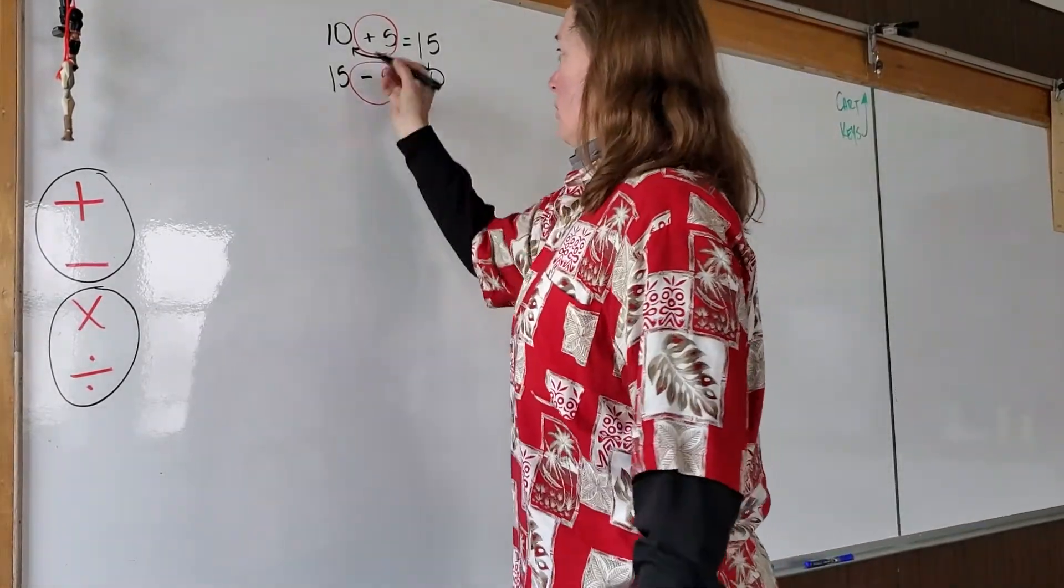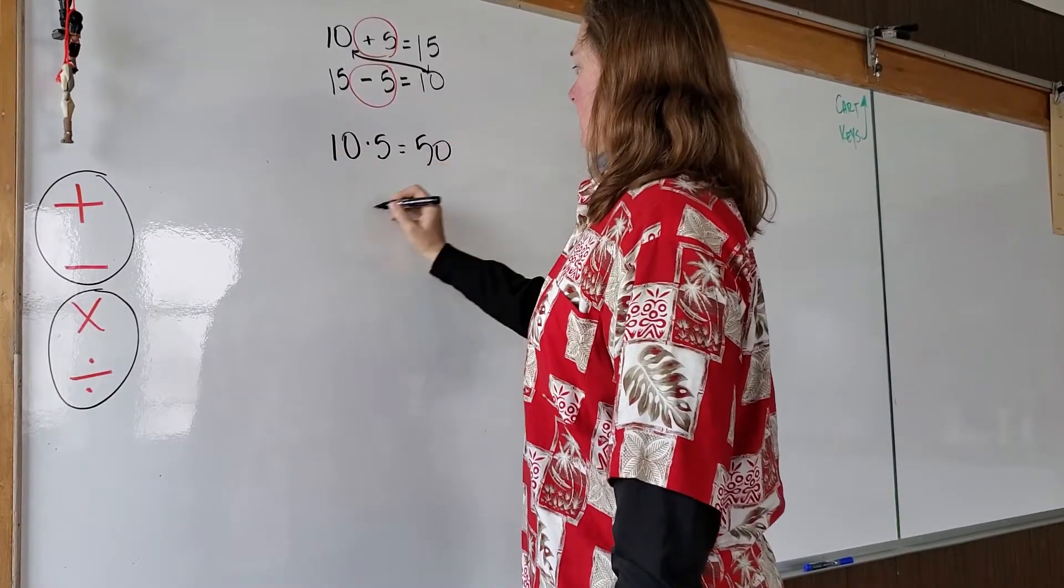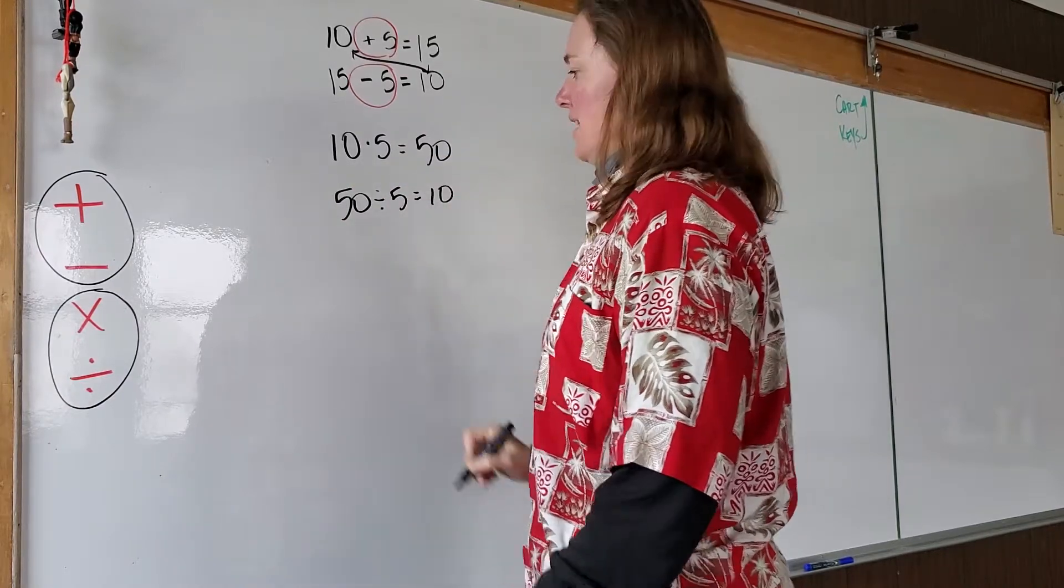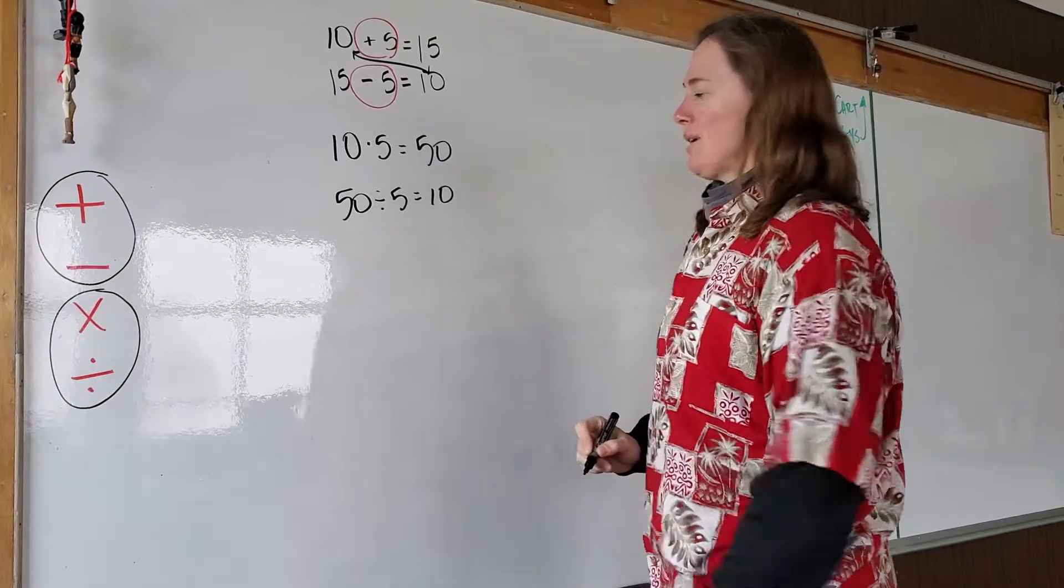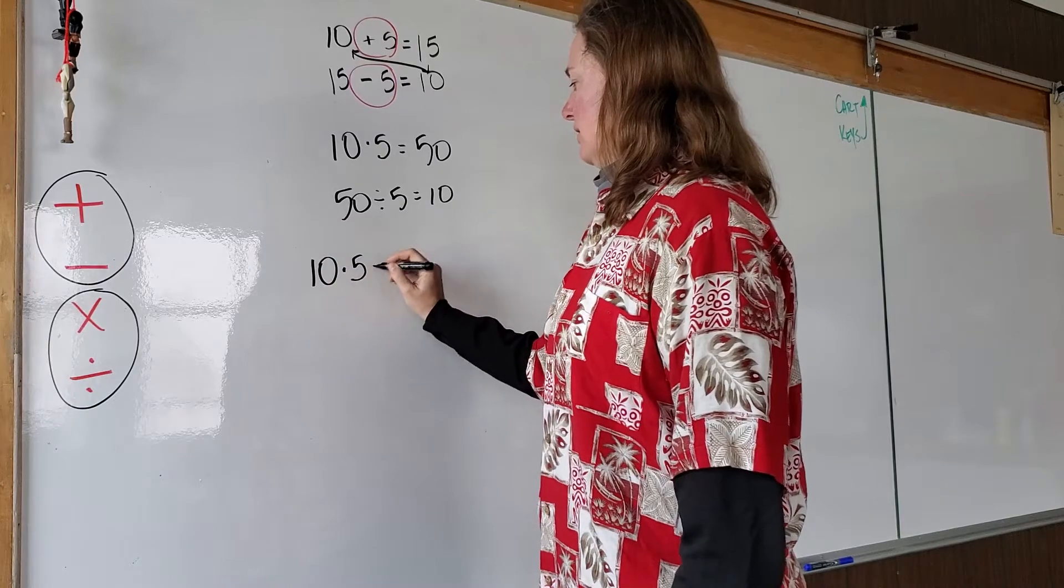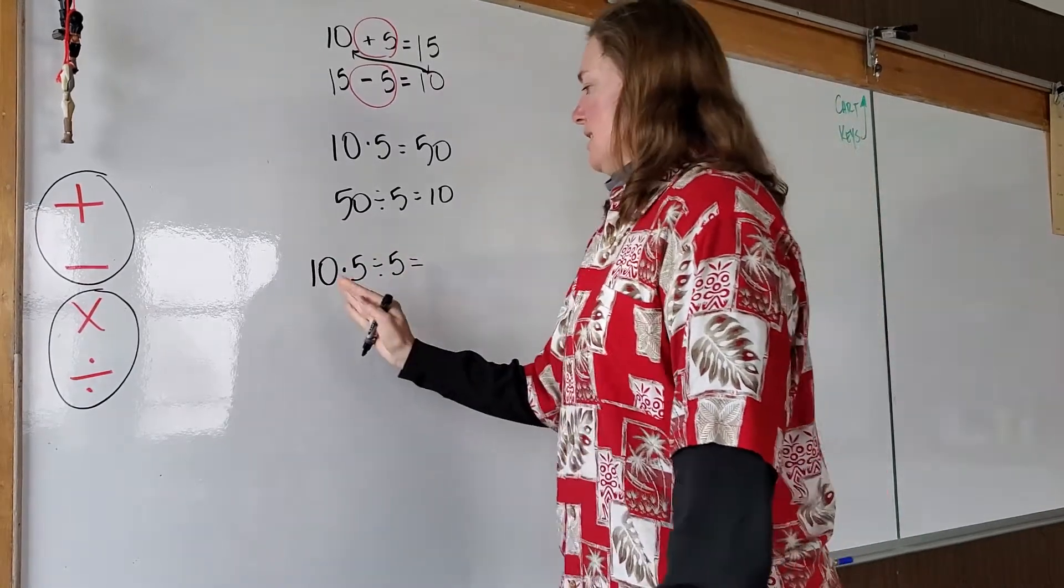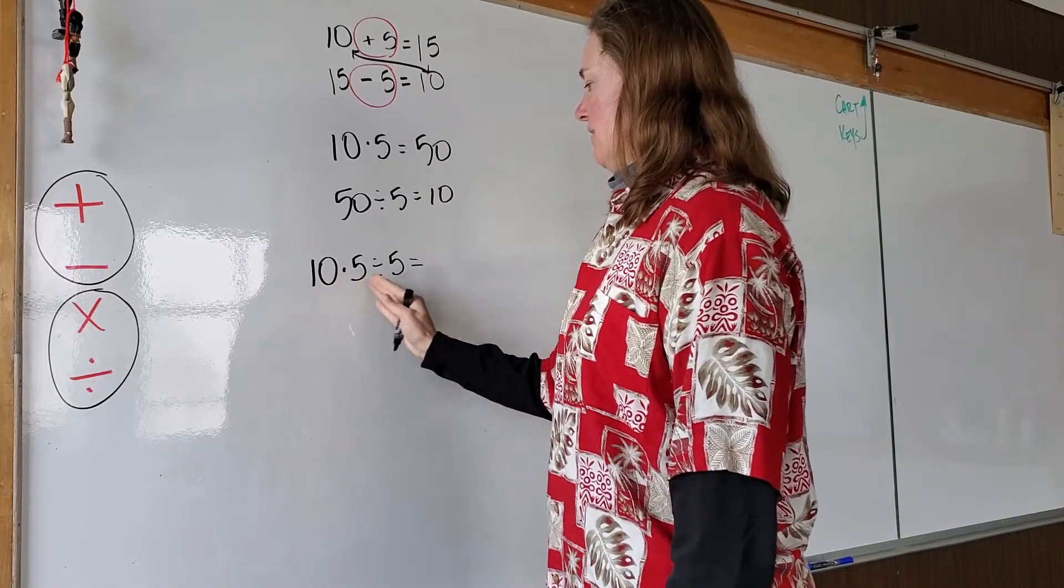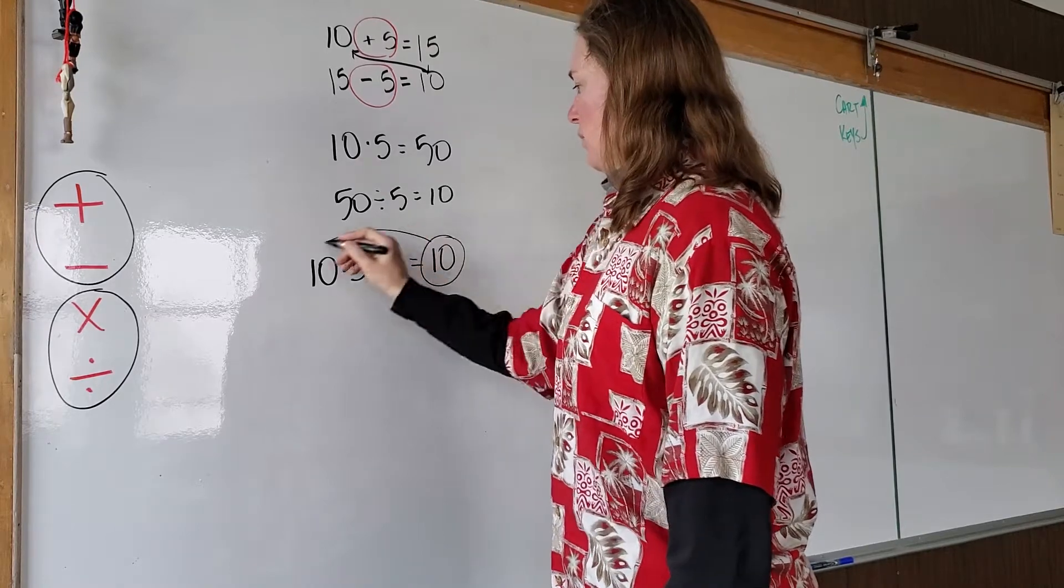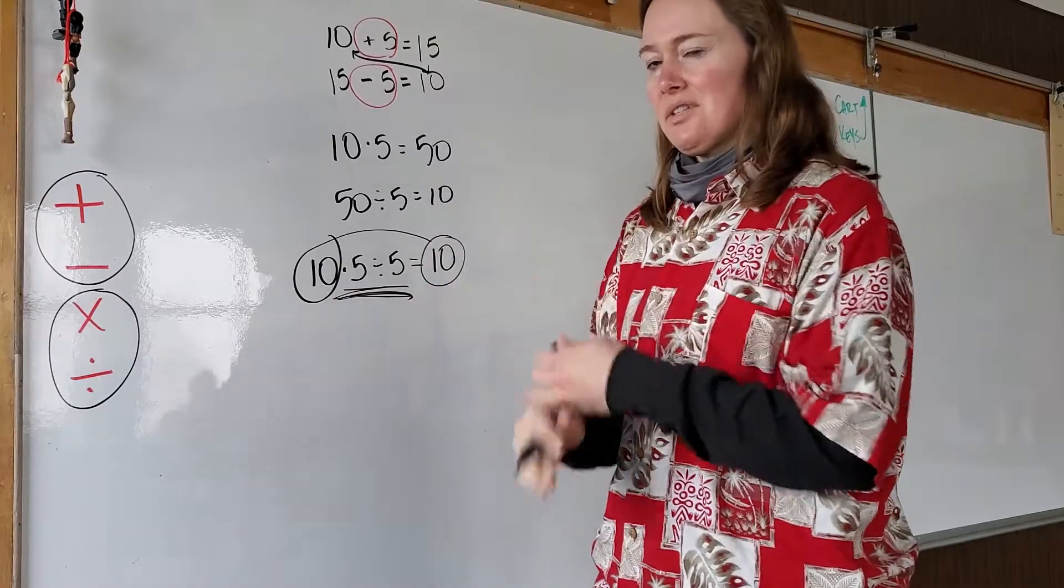Similarly, we'll stay with 10 and 5. If you had 10 times 5, you get 50. And if you take that 50 and divide by 5, you get 10. Here's a better way to write it, the way that I prefer to write it. Let's say you have 10 times 5 divide 5. What do you get? Well, following order of operations, 10 times 5 is 50, and 50 divided by 5 is 10. So we ended with what we started with. That makes these things in the middle inverse. They cancel each other out.